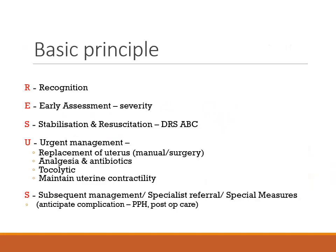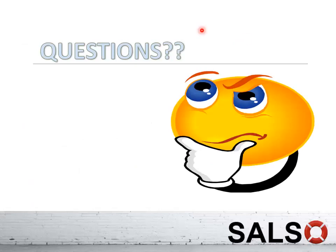In summary, management of uterine inversion follows the basic emergency approach: recognize the condition and its clinical manifestations, assess the degree of shock, stabilize and resuscitate using DRS ABC. For urgent management, replace the uterus manually or surgically, provide analgesia, broad-spectrum antibiotics, and consider tocolysis. After replacement, start oxytocic drugs to maintain uterine contractility, then remove the placenta. Subsequent management depends on patient severity — anticipate PPH, arrange post-operative care, and refer to a tertiary centre as needed.